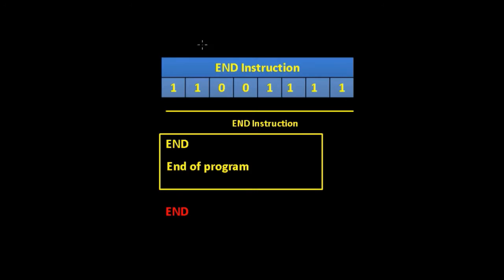Our final instruction is the end instruction, given by 1, 1, 0, 0, 1, 1, 1, 1. The assembly language for it is END, and it just tells us that we're at the end of our program.